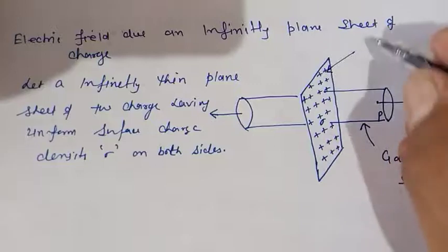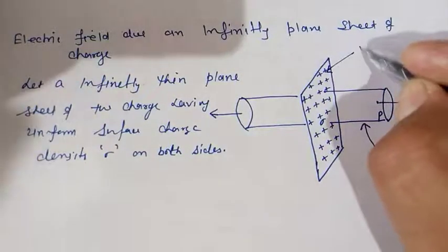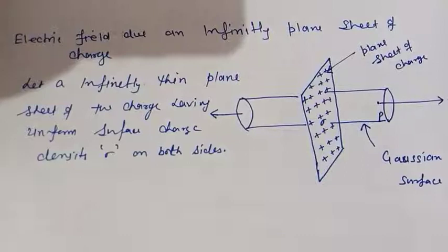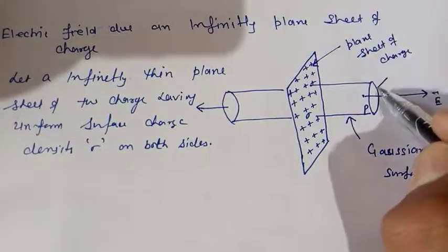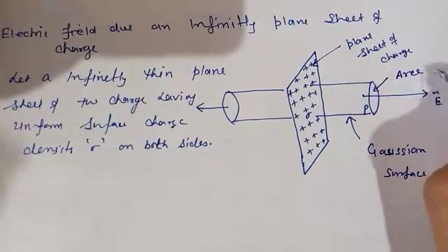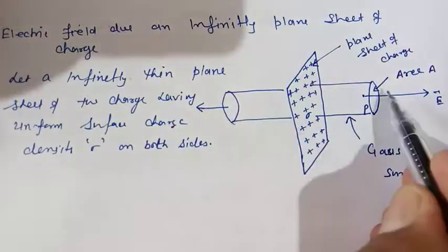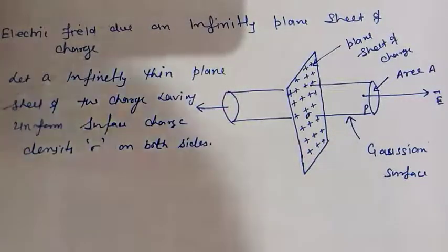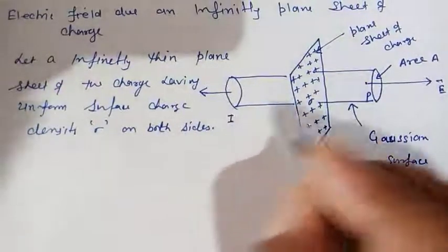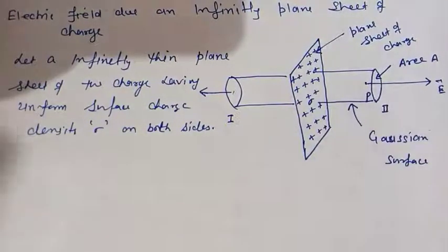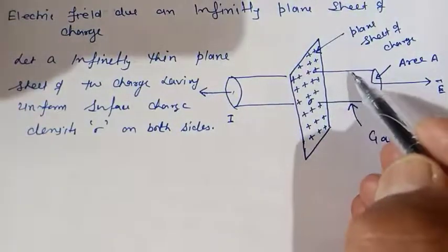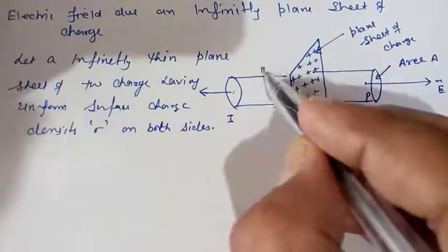This sheet is a plane sheet of charge. From the cylindrical surface we can see that we have two circular faces. Let the area of each circular face be A — so one face has area A and the other also has area A. We have three parts: the first circular part, the second circular part, and the third part which is the curved surface of the cylinder.